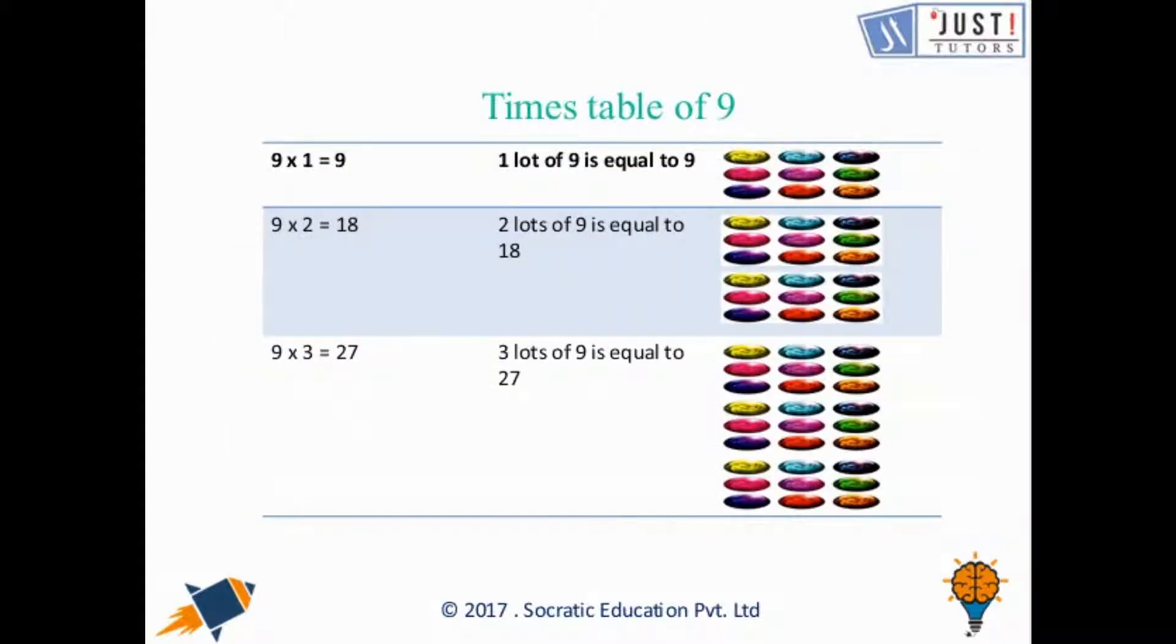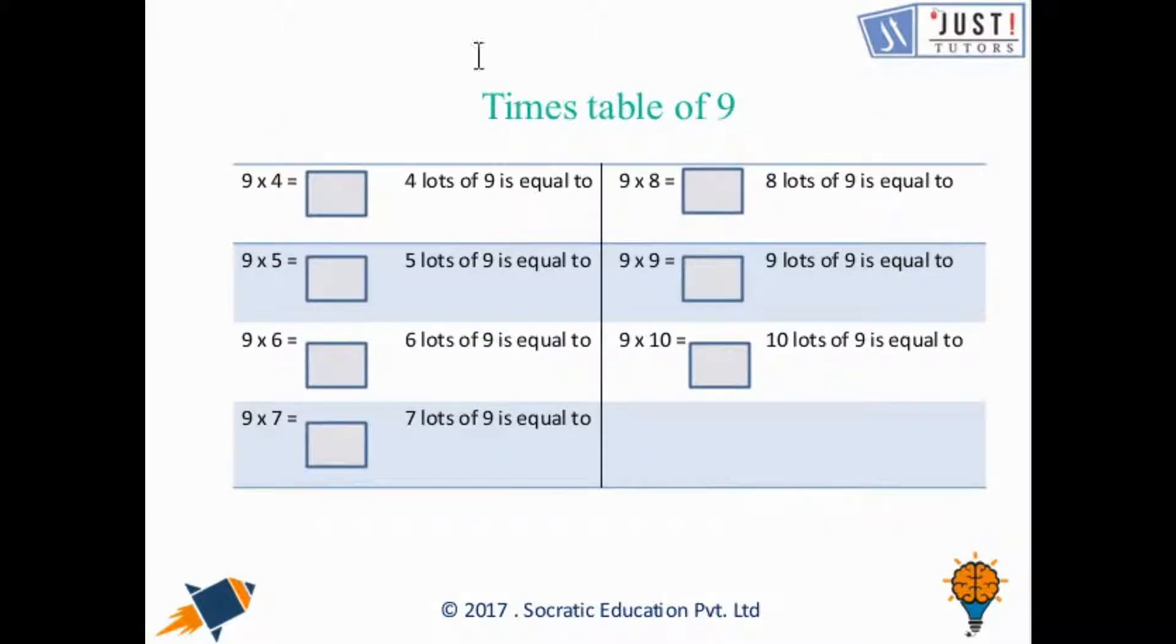Now let us talk about times table of 9. 9 times 1 is 9, 9 times 2 is 18, 9 times 3 is 27, 9 times 4 is 36, 9 times 5 is 45, 9 times 6 is 54, 9 times 7 is 63, 9 times 8 is 72.